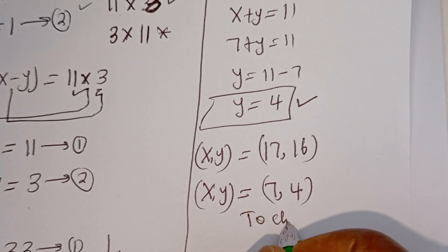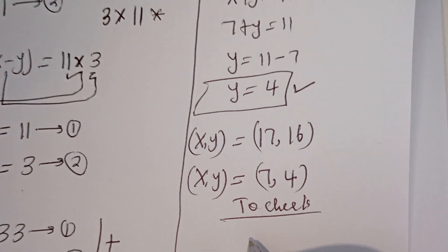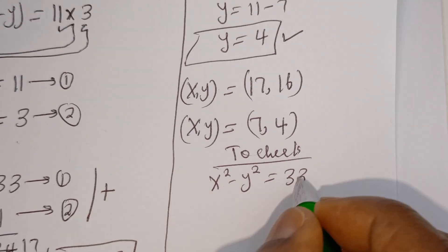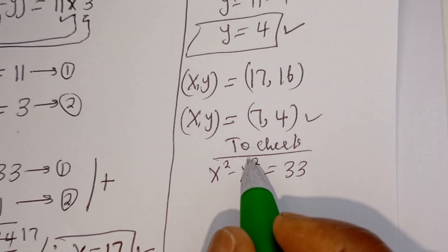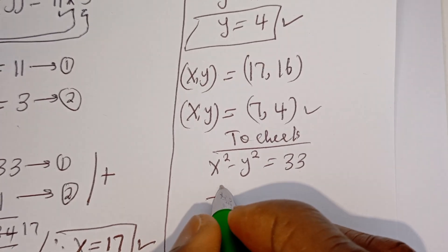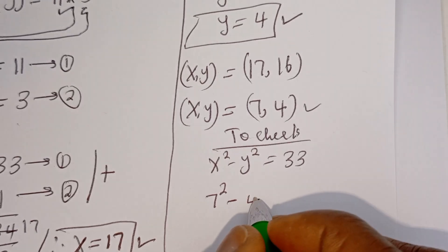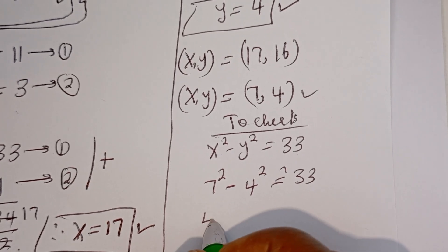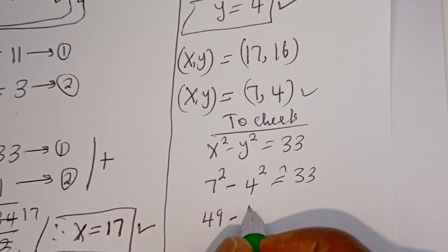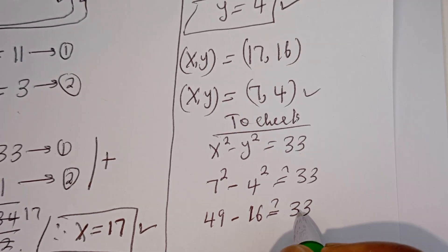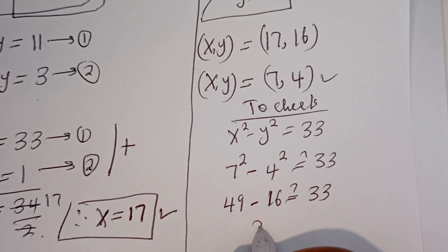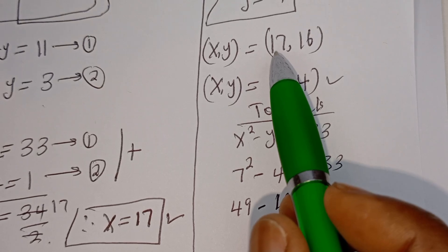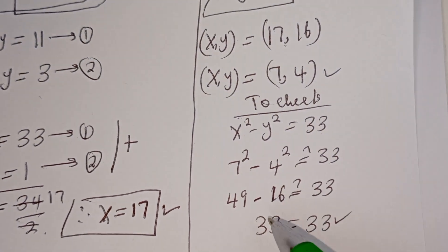To check: we have the given equation X squared minus Y squared equals 33. When X equals 7 and Y equals 4, we have 7 squared minus 4 squared: that is 49 minus 16 equals 33, which is true. You may also verify using X equals 17 and Y equals 16 and will get the same answer.